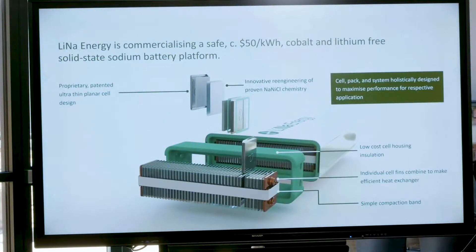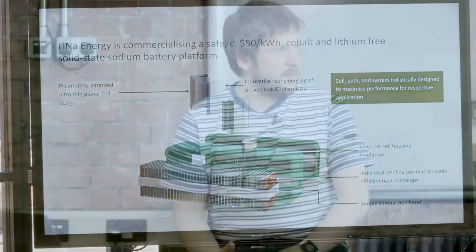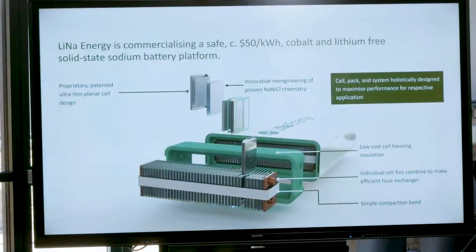The IP is protected by four core patents produced in the last four years, ranging from the cell all the way up to the pack design. We are targeting $50 per kilowatt hour, which is considerably lower than where lithium-ion stands today. The final cells are cobalt and lithium free — cobalt in particular being one of the main issues with high-performing lithium-ion batteries in terms of reliable sourcing.